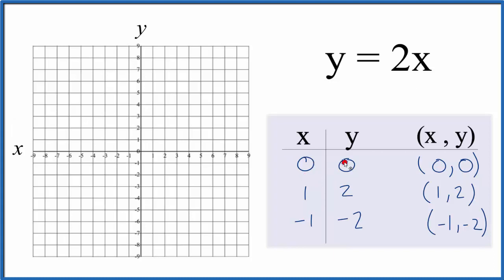So x is 0, y is 0. So we find x is 0, and then y is 0 right there. How about x is 1, y is 2. So we go 1, and then we go up 2.